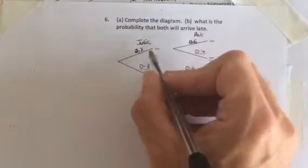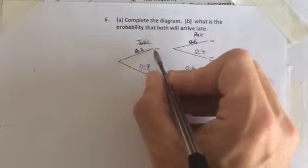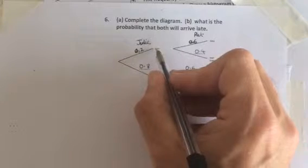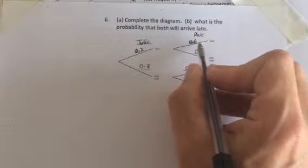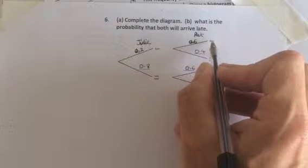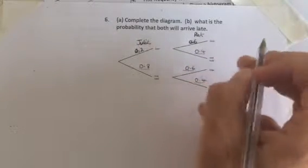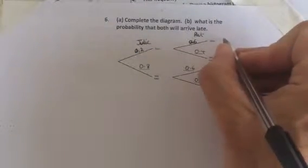So, 0.2 of the time, Julie is late, and of those 0.2 times, Pat is late as well, 0.6 of the time. Okay, so this will be 0.2 times 0.6, and we multiply to get 0.12.